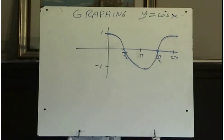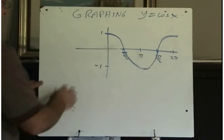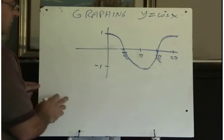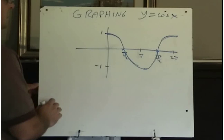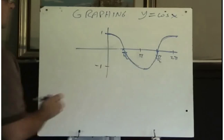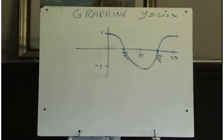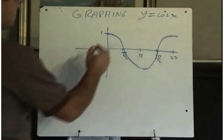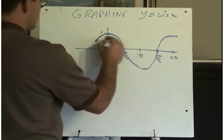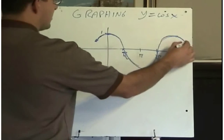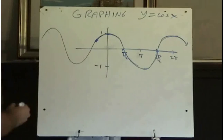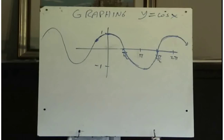So this is the graph of y equals cosine x. I'll leave it up to you to work out the domain and range, the x-intercept, the y-intercept, the maximum and minimum, and what values of x those occur at. Again, you should be able to draw this graph from memory and understand that this continues its wave pattern to the left and to the right.